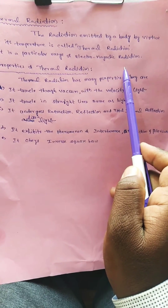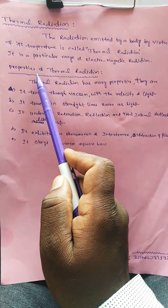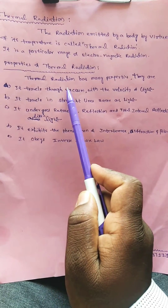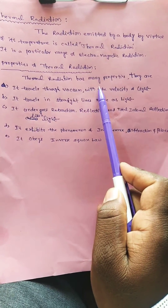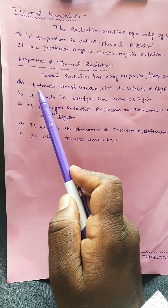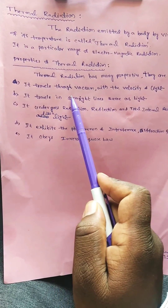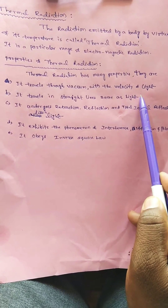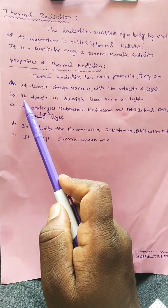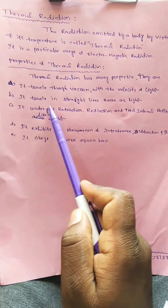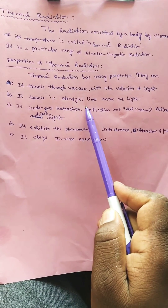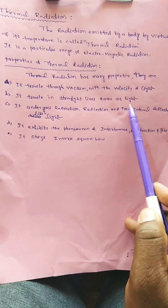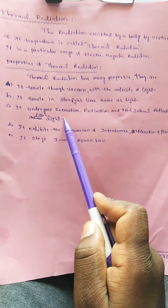Let's see the properties of thermal radiation. Thermal radiation has many properties. First, it travels through vacuum with the velocity of light. Second, it travels in a straight line, the same as light. It also undergoes refraction, reflection, and total internal reflection, just like light.